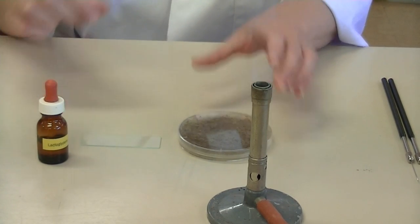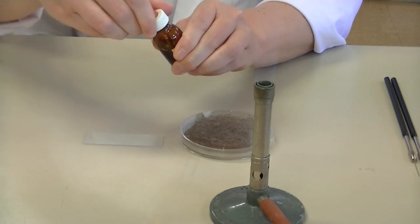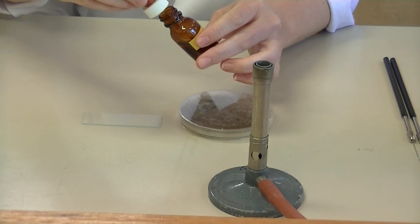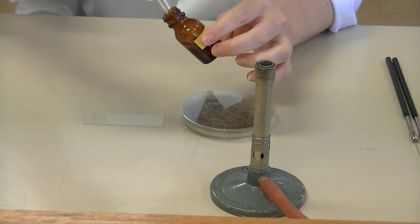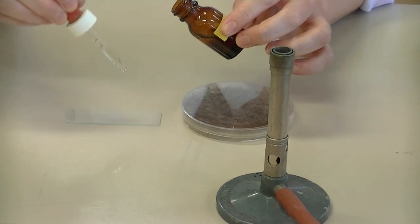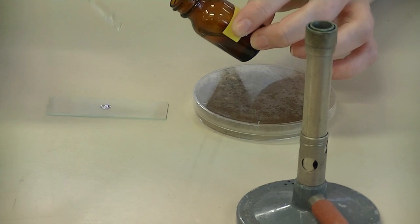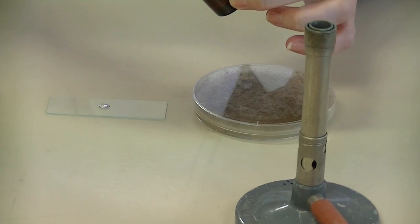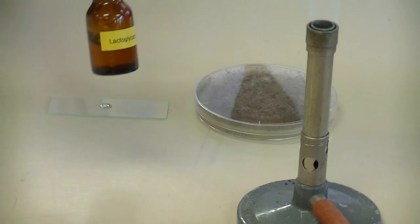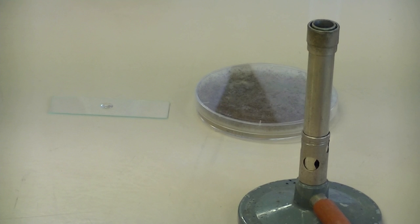So to prepare a simple slide you need to add a drop of lactoglycerol to the slide. So use the dropper to collect some and then drop it to the center of your slide. Make sure you replace the lid very tightly so that when other people use the bottle it doesn't fall onto the bench and spill.